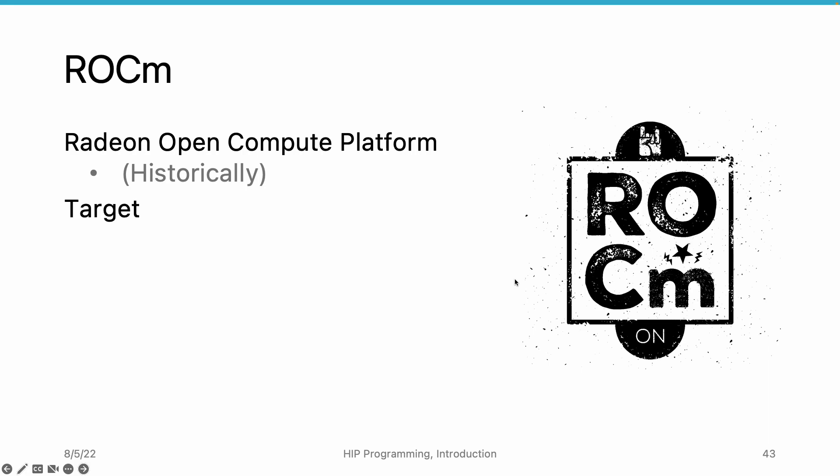The target of ROCm is to support extreme-scale computing. It is intended to support computing with tens to hundreds of GPUs in a supercomputer, or even distributed computing that connects computers all over the world. With ROCm, we can combine those computers and GPUs to work on a single application.